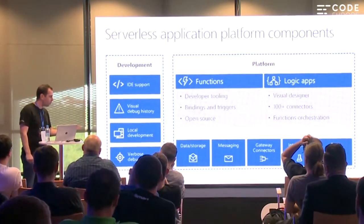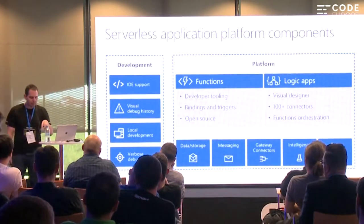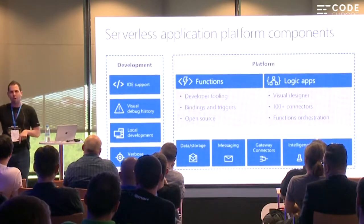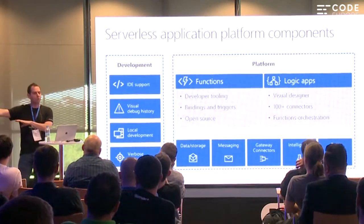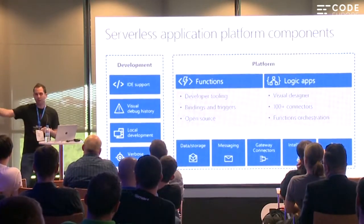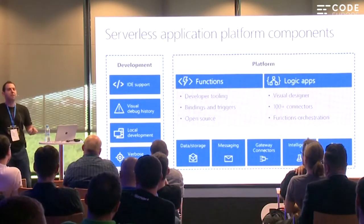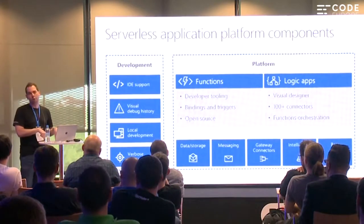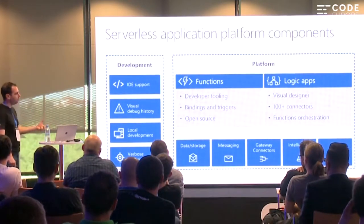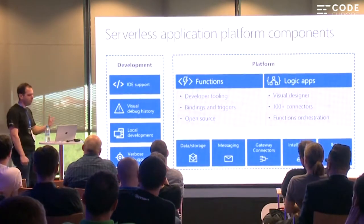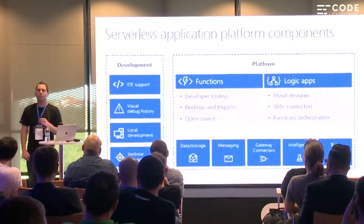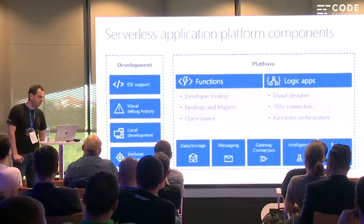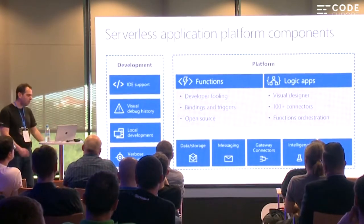Local development lets you build everything locally, test it before deploying. Even cooler — you can build and test functions locally while they fire off events happening in the cloud. You could have a customer drop an image or CSV file into cloud storage and trigger off that on your local machine, which is really neat. Verbose debugging gives you very detailed output to troubleshoot and rapidly fix issues.